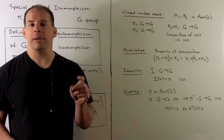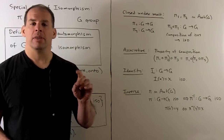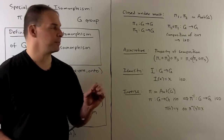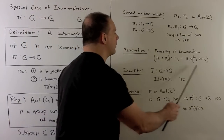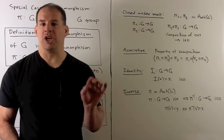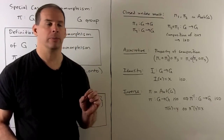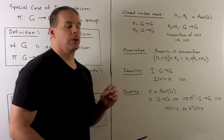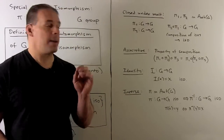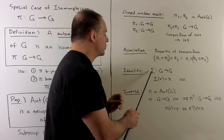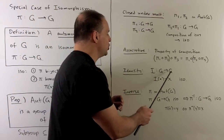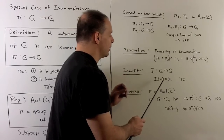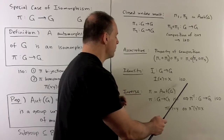Second property: associativity. This follows immediately from composition of functions — we inherit it from the bijections from G to G. For the identity element, we consider the identity map going from G to G, which sends each element x to itself. We saw last time that's an isomorphism.